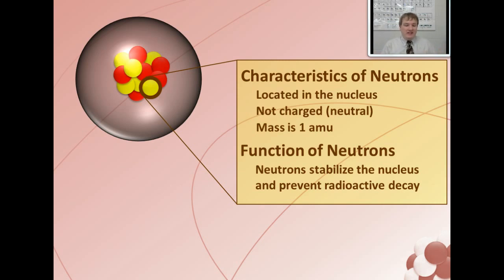So we learned that in the previous lesson, there were characteristics and functions of protons. We also learned what happens when you change the number of protons in an atom. What happens if you change the number of neutrons?